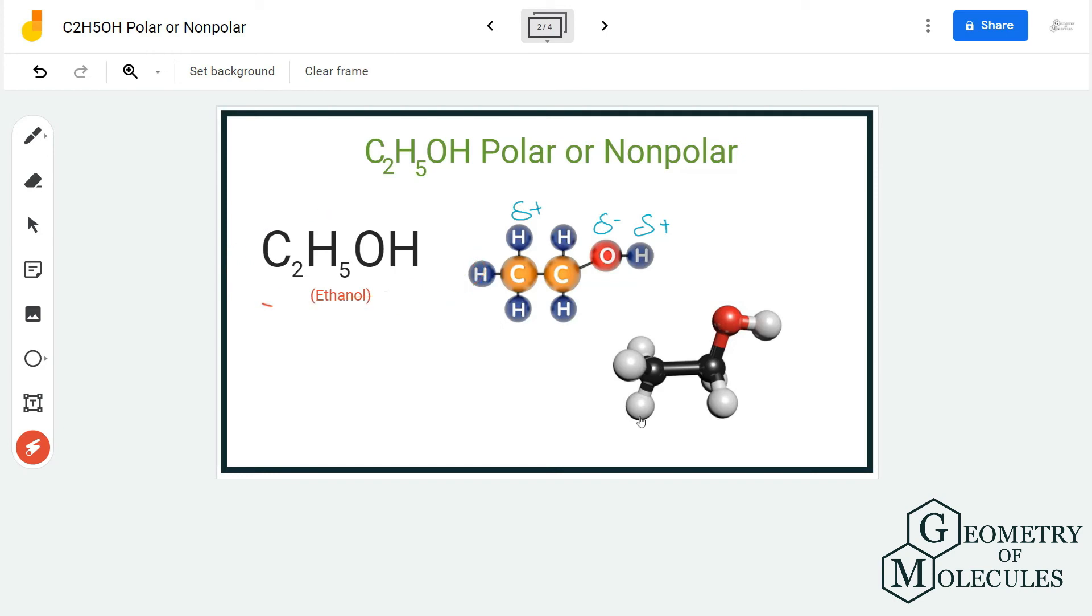Hence ethanol is a polar molecule. So C2H5OH, that is ethanol, is a polar molecule given that there is the formation of poles in this molecule and there is a difference of electronegativities between carbon and the oxygen atom involved in the structure.